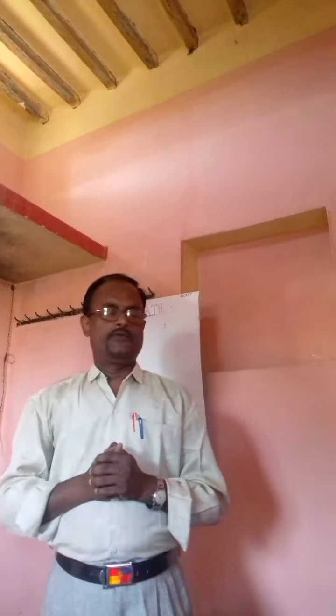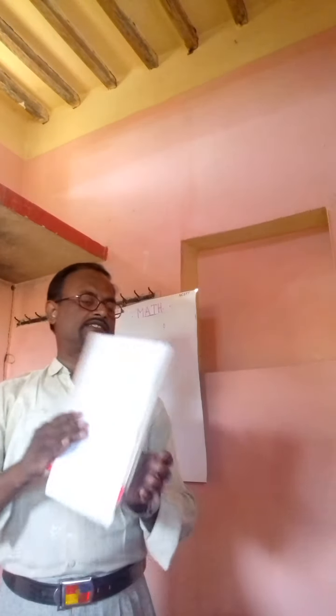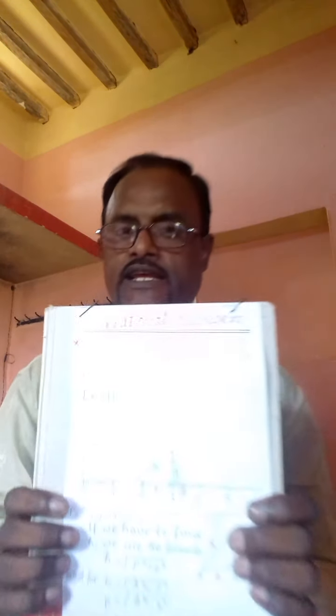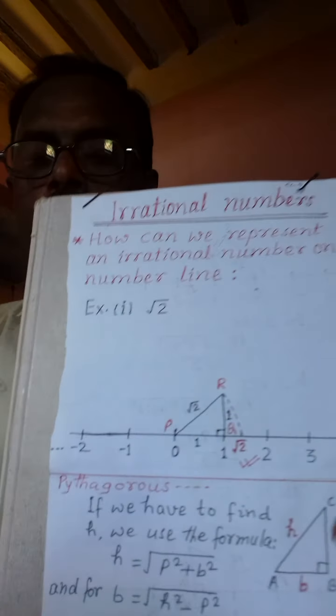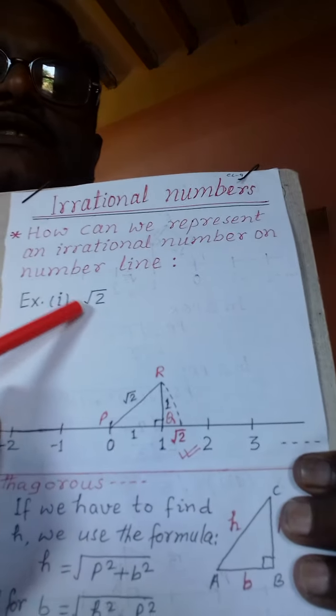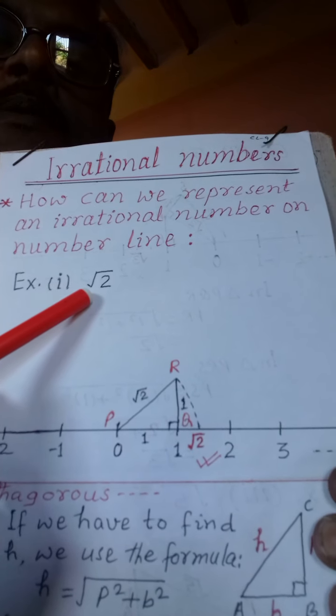Dear students, please be ready with your notebook and a pen. Without wasting time, I will come straight to the point. For this, we take an example: root 2. You can see this on the screen. We have to represent this irrational number on the number line.